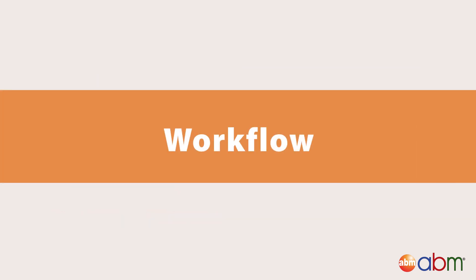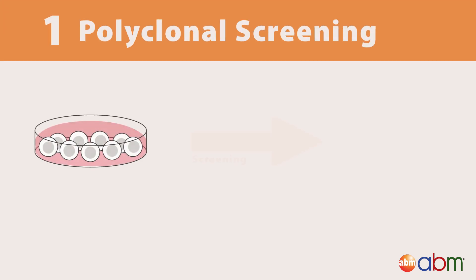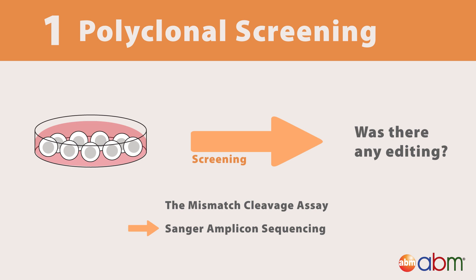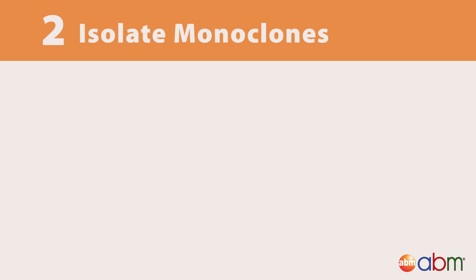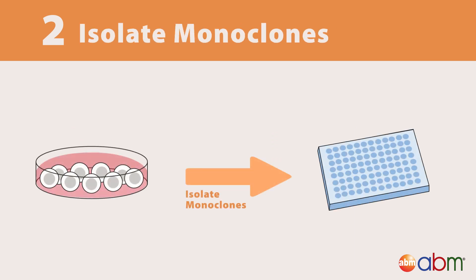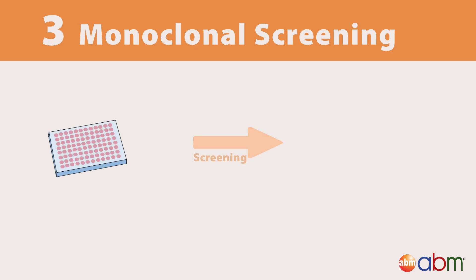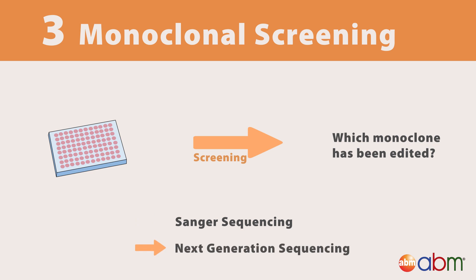The basic workflow for CRISPR screening is: 1. Screen your polyclonal pool to see what proportion of cells was edited, using the mismatch cleavage assay, Sanger amplicon sequencing, or next-generation amplicon sequencing. 2. If some of the population was edited, isolate single cells, then expand to create monoclonal cell lines. 3. Screen monoclonal cell lines for one which has the desired edit using Sanger sequencing or next-generation sequencing.